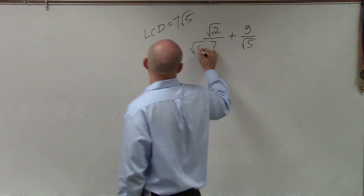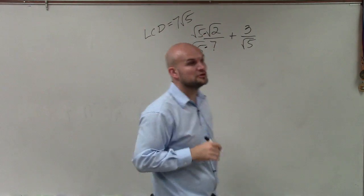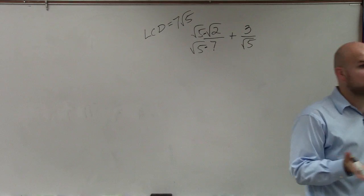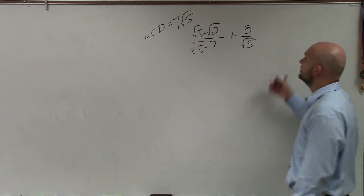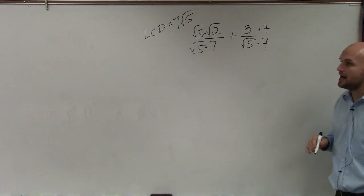And that's okay because I'm just producing equivalent fractions. As long as I multiply by the same thing, that's okay. Then over here, I need to multiply by 7 over 7.